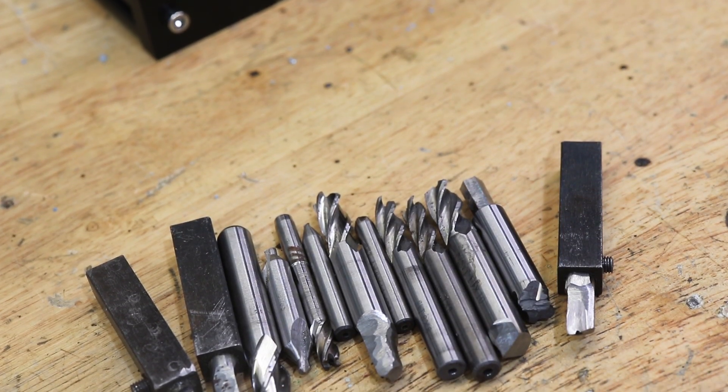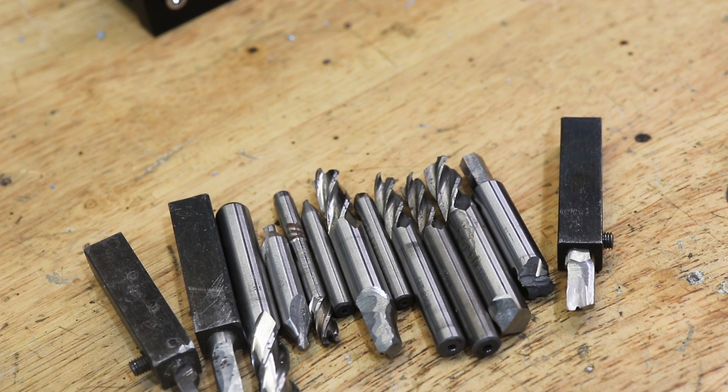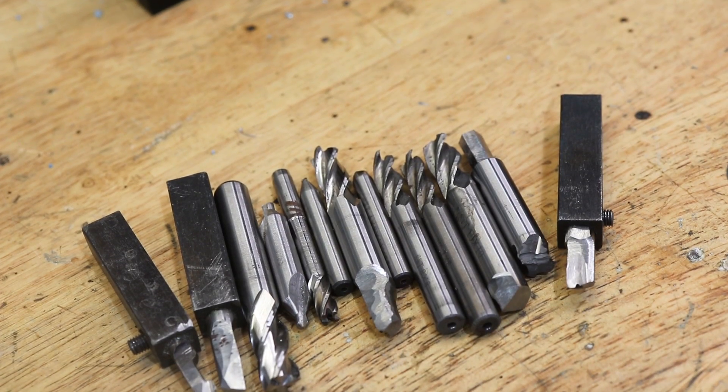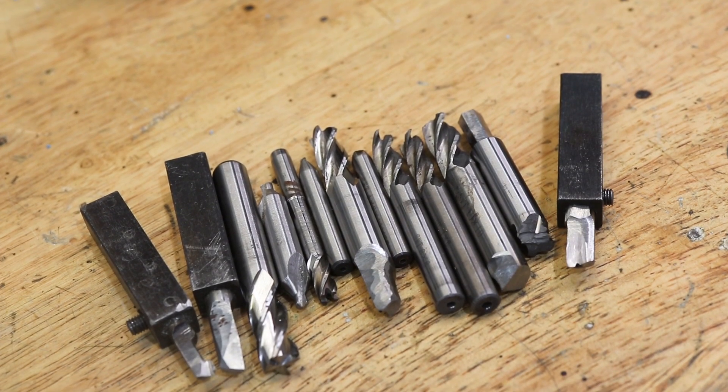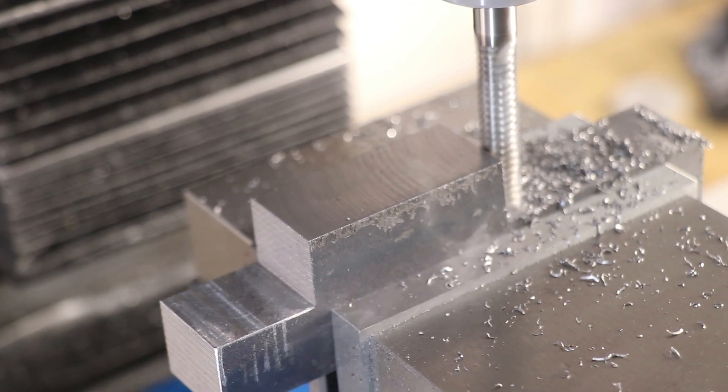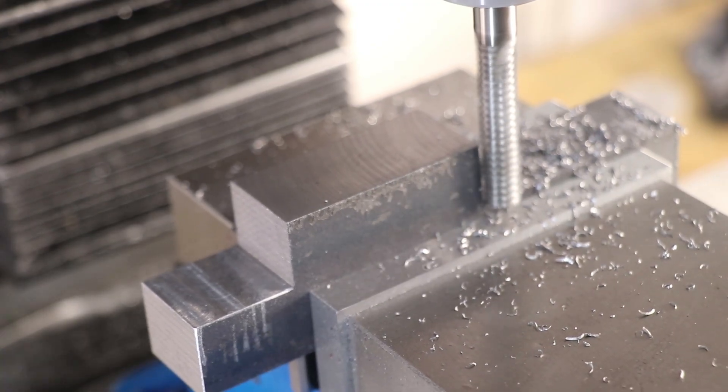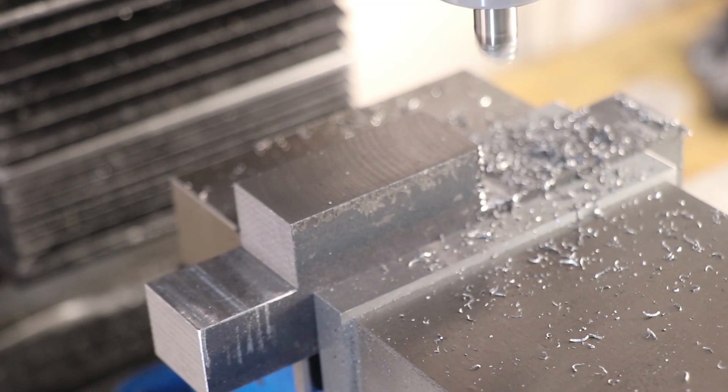Broken end mills. Let's face it, if you use machine tools you're going to break machine tools and milling machines can be pretty cruel in that way. One second everything is fine and the next second your $30 end mill decides to do the magic vanishing act. That's what taking a too deep depth of cut and forgetting to lock the table can do. 100% my fault.